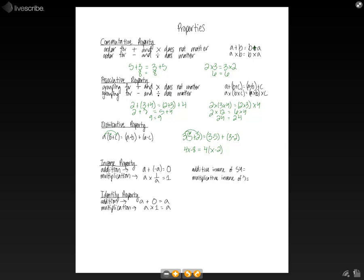And then next is the inverse property. And for addition, this says that a number plus the negative of that number is equal to 0. So the additive inverse of 54 would be negative 54.